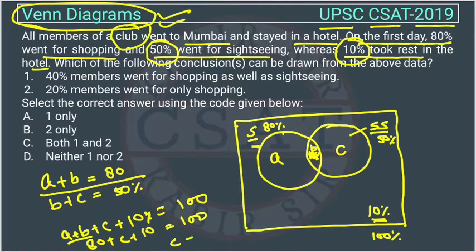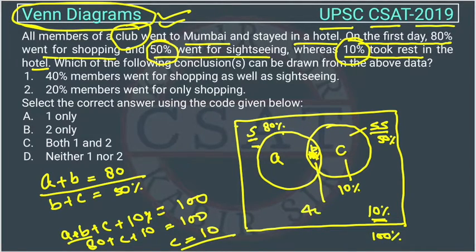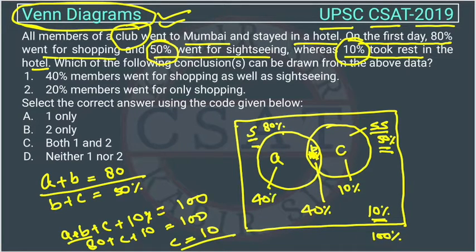From the equation, C equals 10%. Since B plus C is 50 and C is 10, B equals 40. Since A plus B is 80 and B is 40, A equals 40. So A is 40%, B is 40%, and C is 10%.